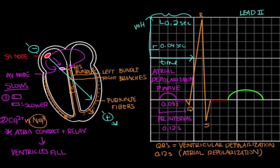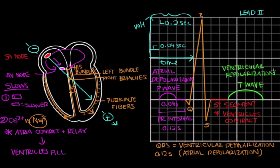Just after ventricular depolarization and in the initial phase of ventricular repolarization, there's a flat segment on the EKG known as the ST segment. The ST segment represents a period where there's no net current — no large electrical vectors in any direction. During the ST segment, the ventricles are contracting and pumping blood to the aorta and to the pulmonary artery. Finally, the ventricular cells repolarize, and this is seen as the T wave on EKG. The T wave is flatter and longer than the QRS complex because repolarization is a slower process than depolarization. The T wave typically takes up about 4 boxes or 0.16 seconds.